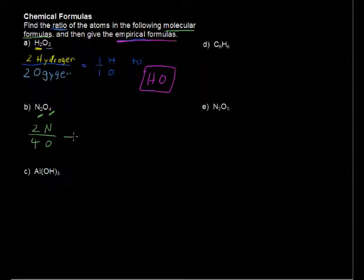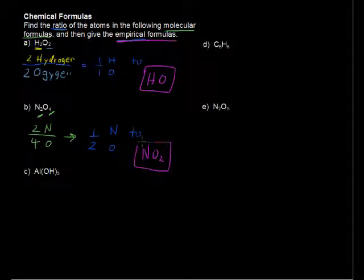So 2 to 4, if we were to simplify that fraction, then we would have this fraction 1 to 2. So 1 nitrogen to 2 oxygen atoms. And that's our ratio, 1 nitrogen to 2 oxygen. So then the empirical formula, written in purple again, would be NO2. That's the empirical formula.